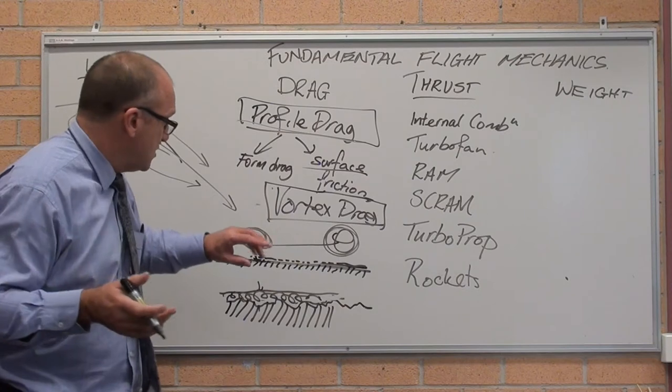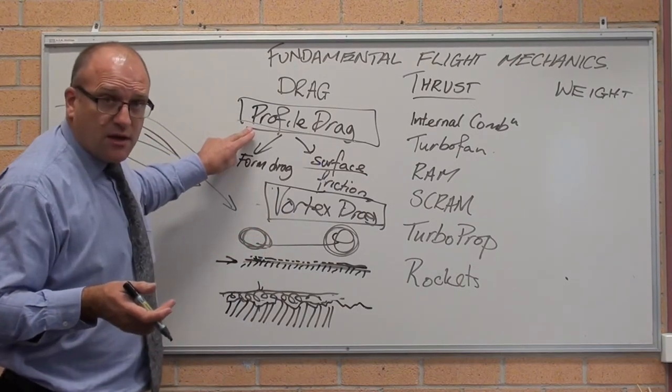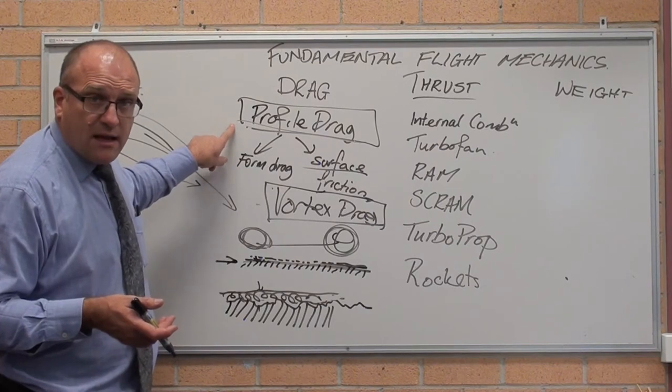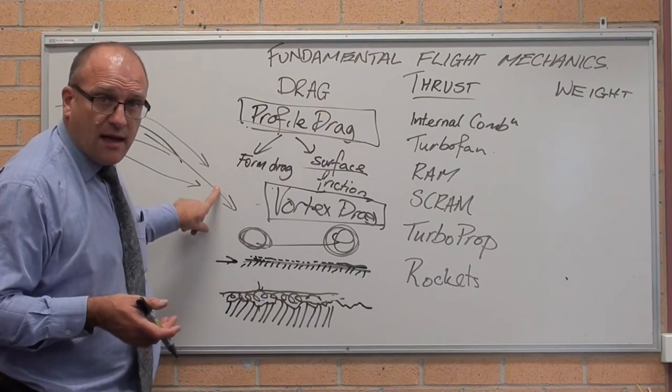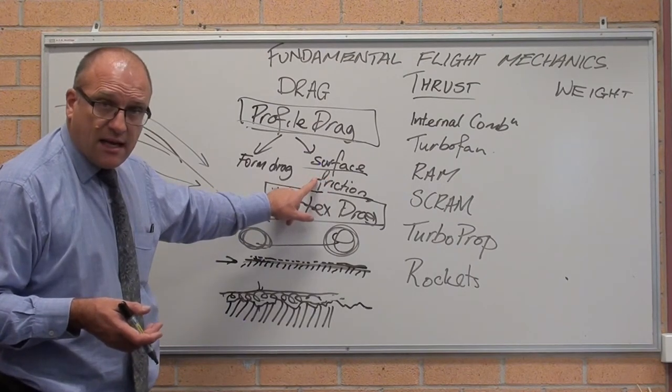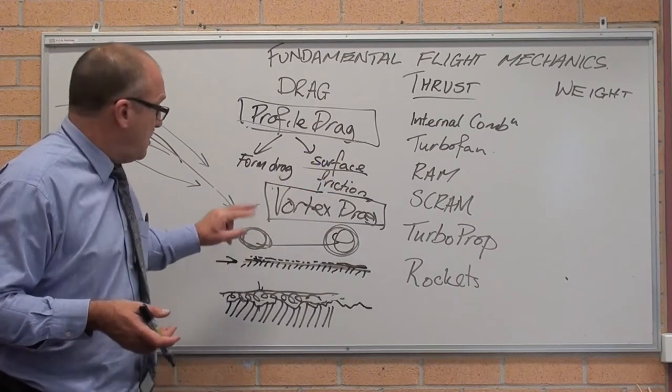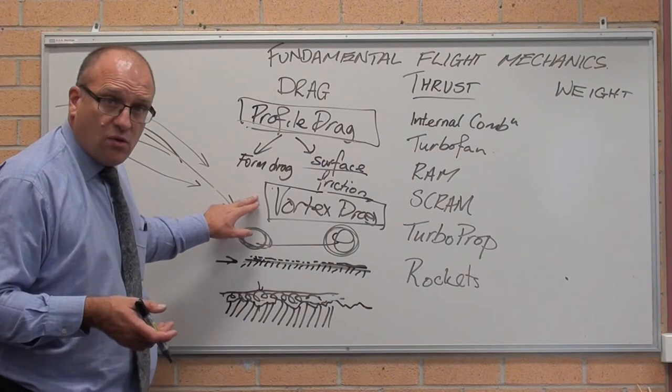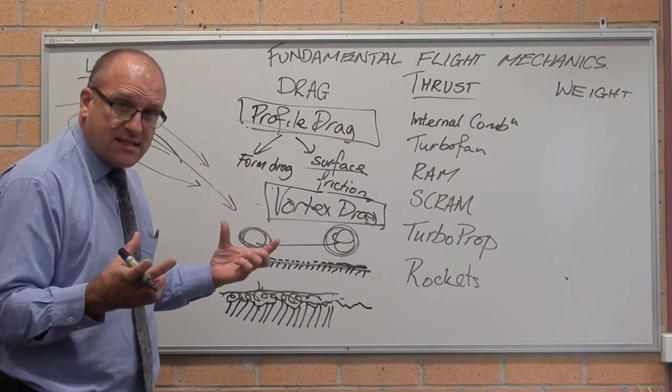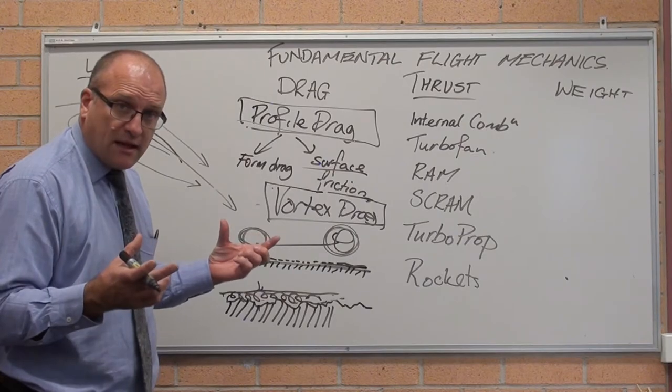So you don't need to know the maths, you need to know there's two forms of drag. Profile drag is the shape, how much it disturbs the air, and how smooth the skin is. Vortex drag, or induced drag, is a function of how long the wing sees the air for. We'll talk about drag later.